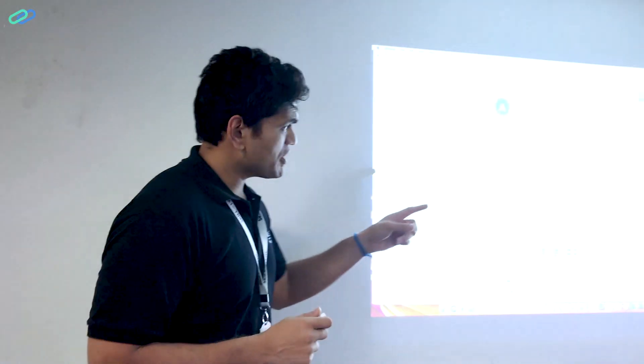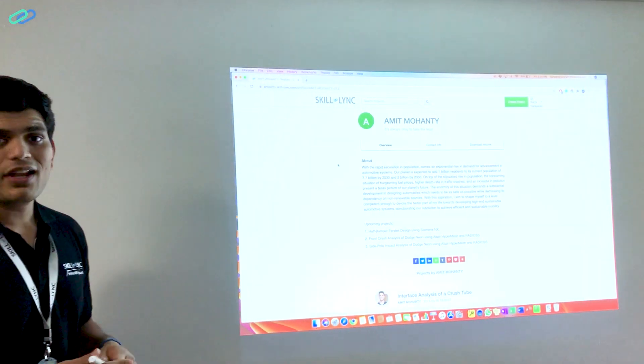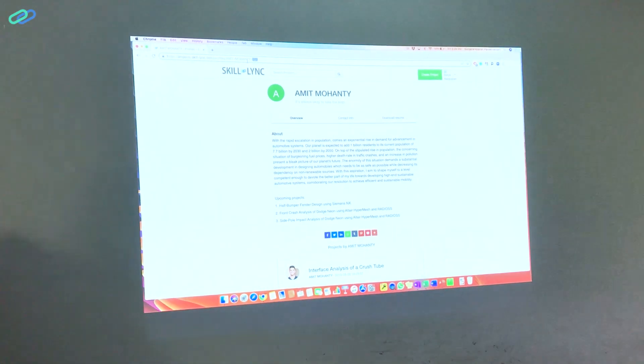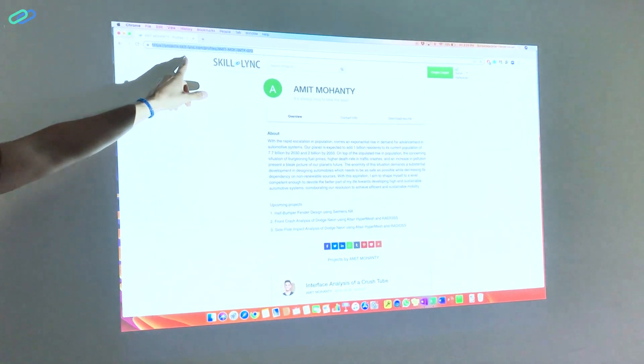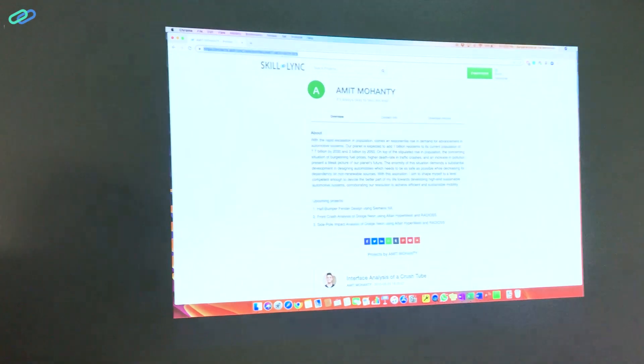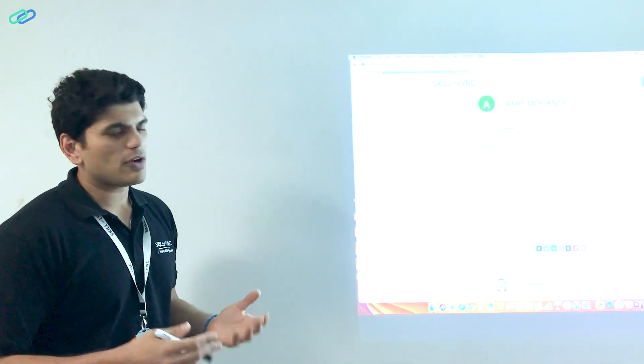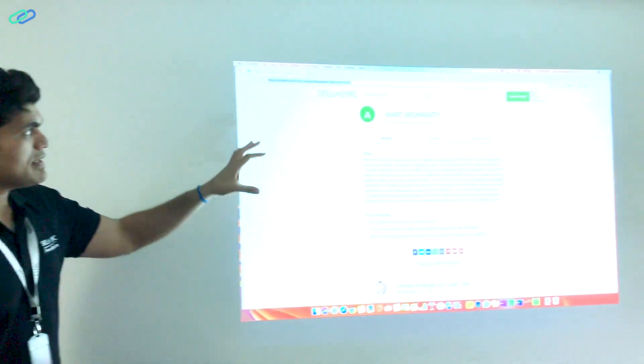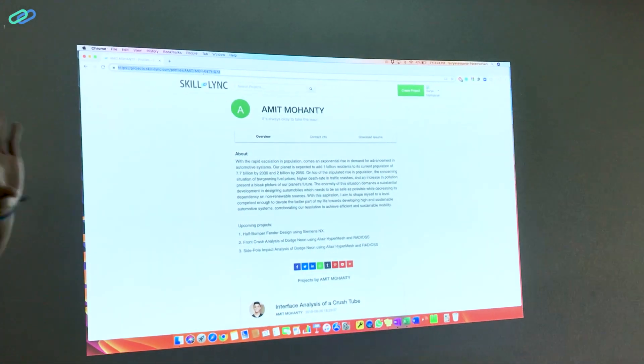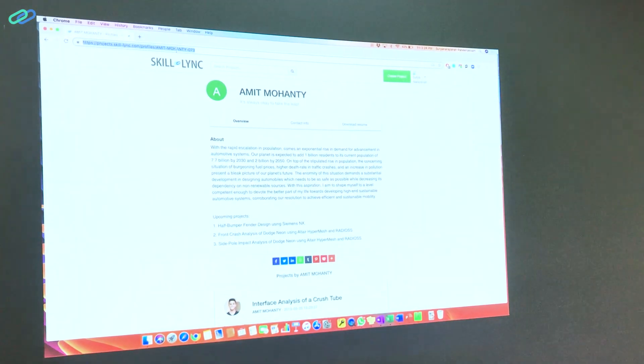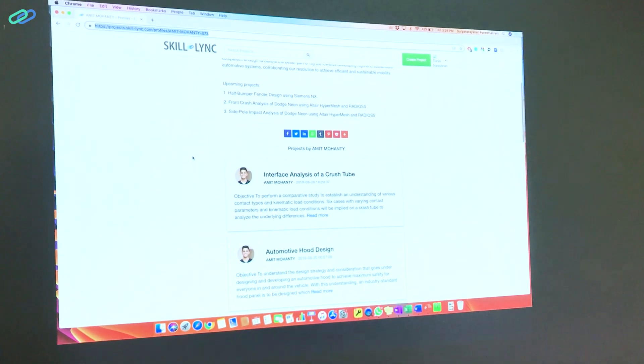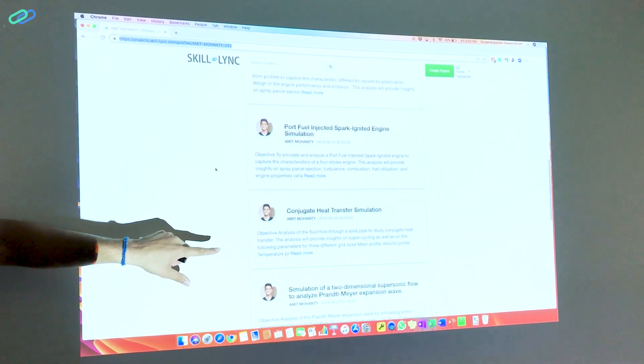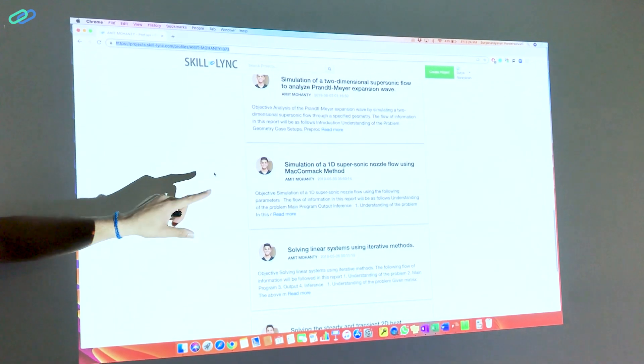I have just projected a student's portfolio over here. This is Amit Mohanty's portfolio and this is Amit Mohanty's unique portfolio. If you see the URL over here, you can see it's projects.skilllink.com/AmitMohanty. If you are Kaushik and you are enrolling into our course and you are working on these projects, then you will have profiles/Kaushik and your unique ID number there as well. This is your detailed LinkedIn page where you will have your about section, and then you will have your projects that you have worked on. These are the different projects that Amit has worked on in the coursework as a part of our master's course.